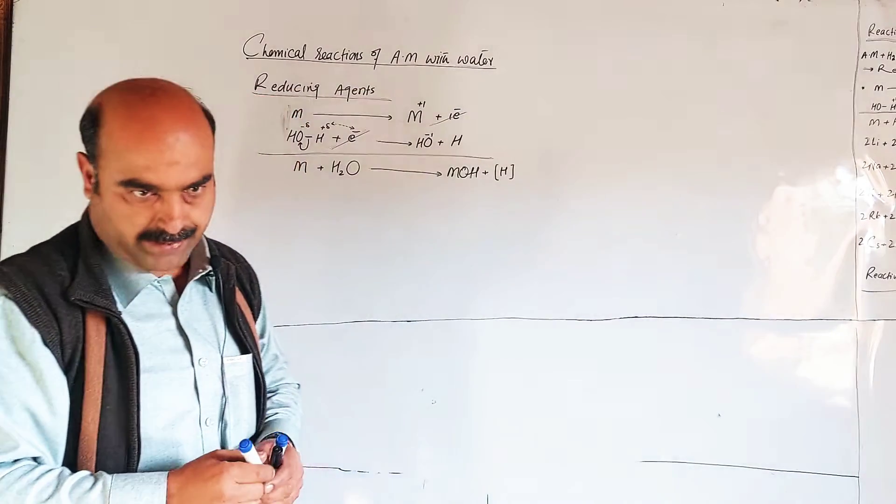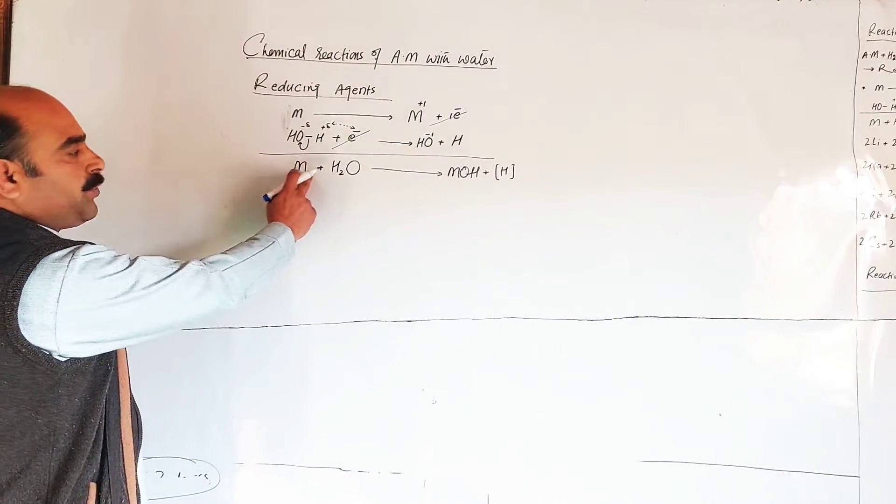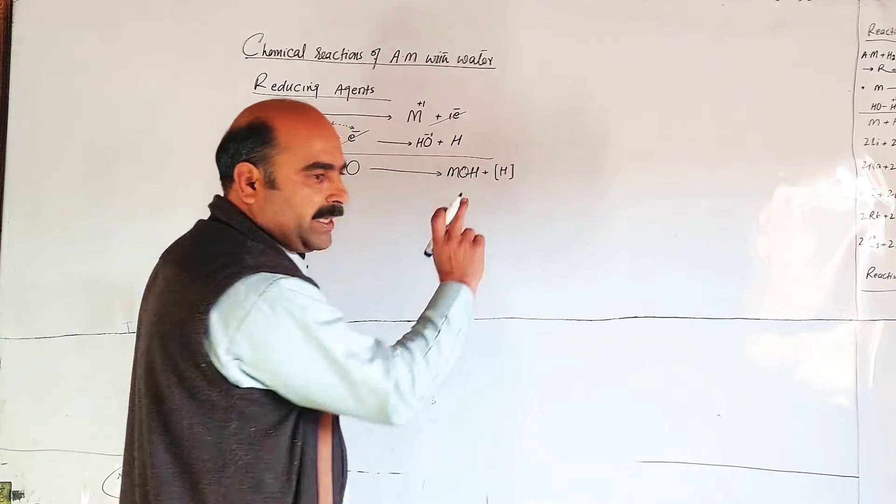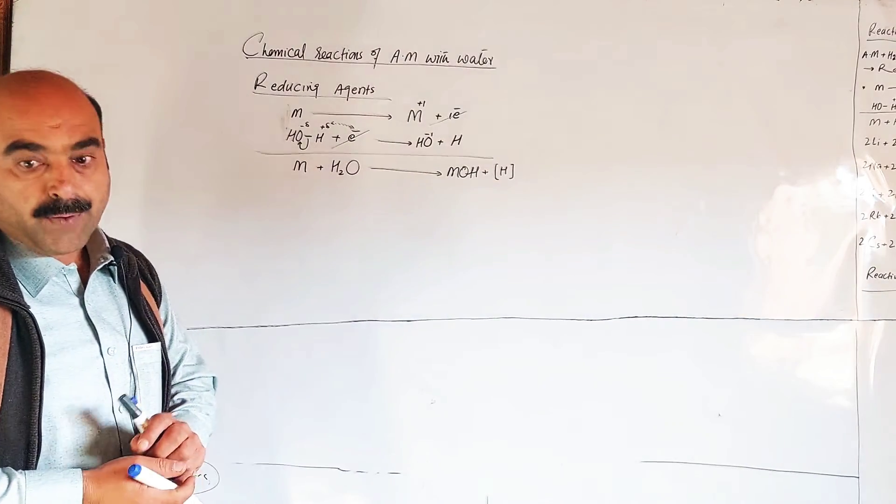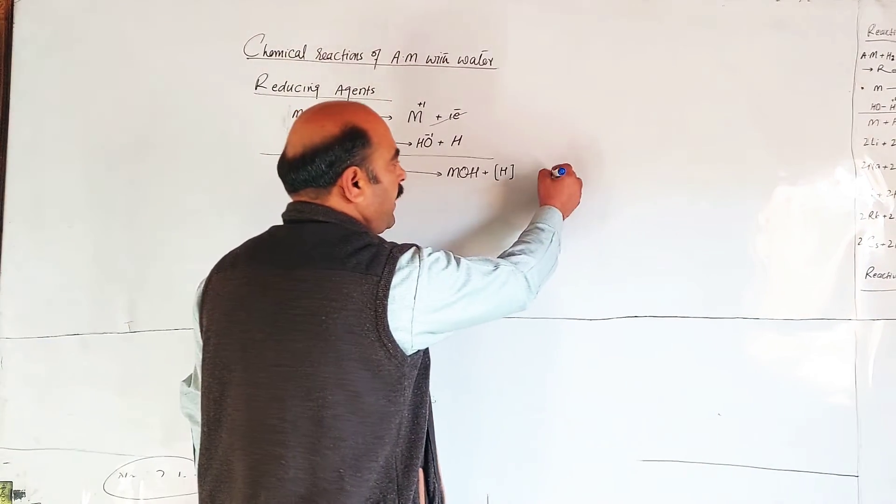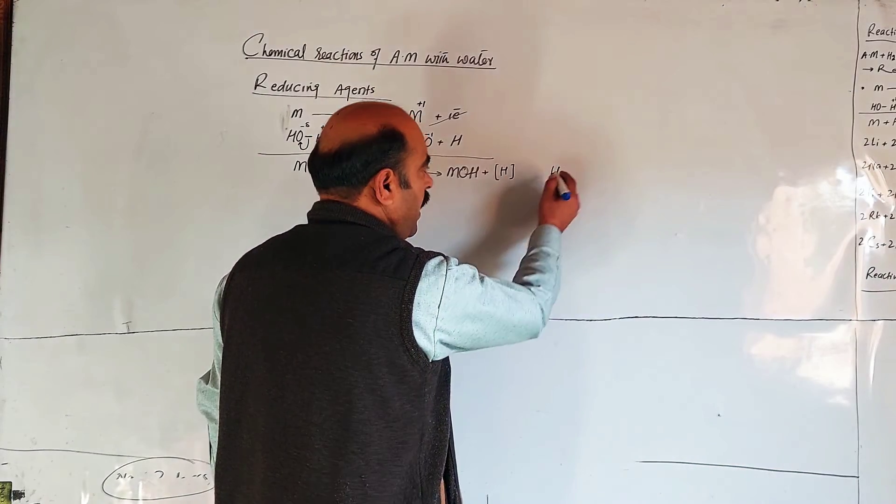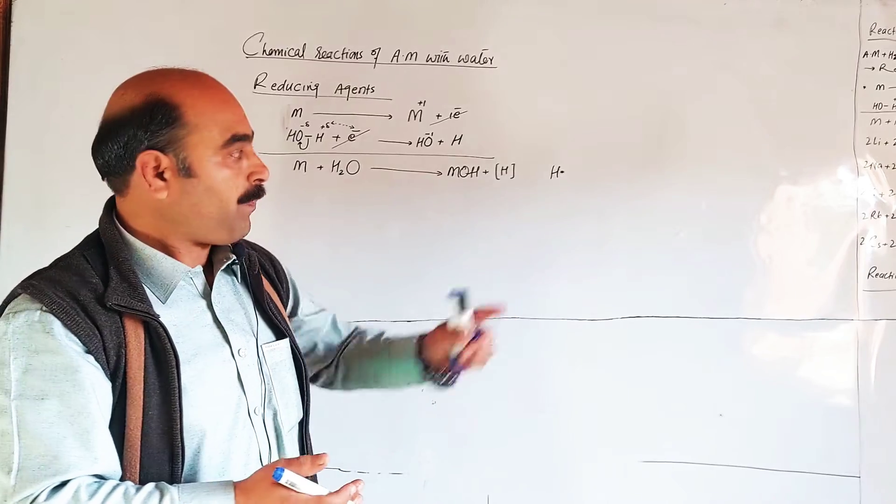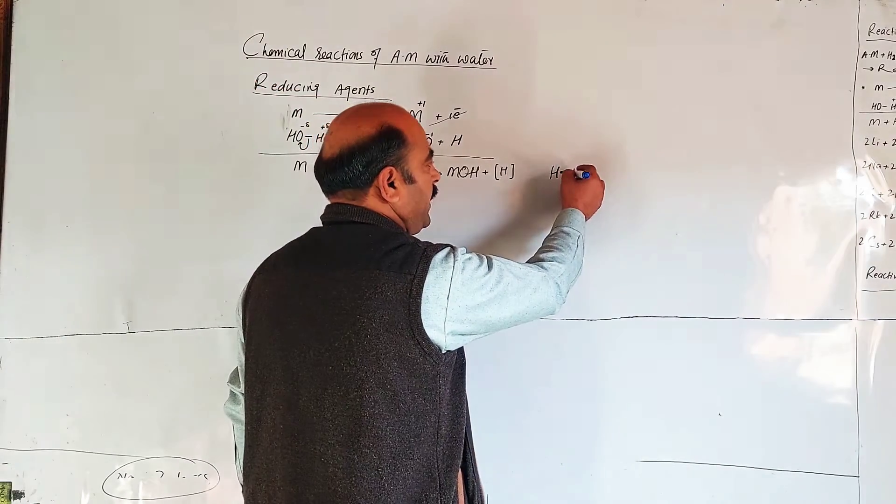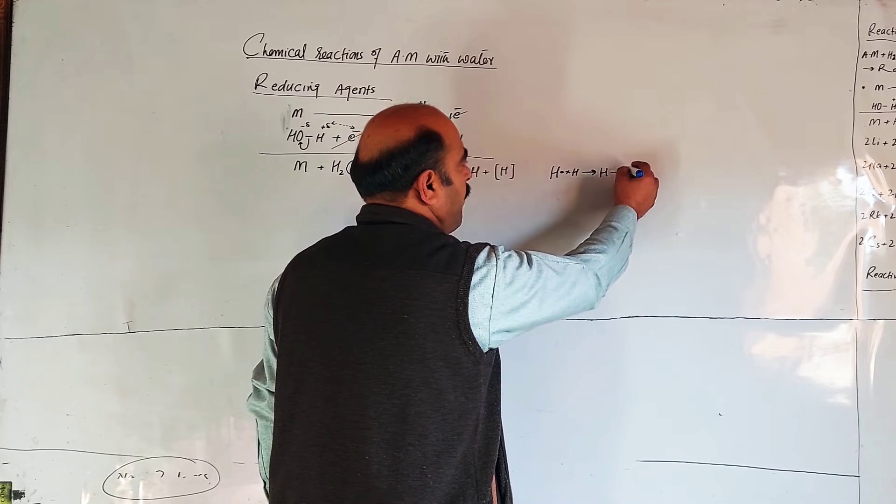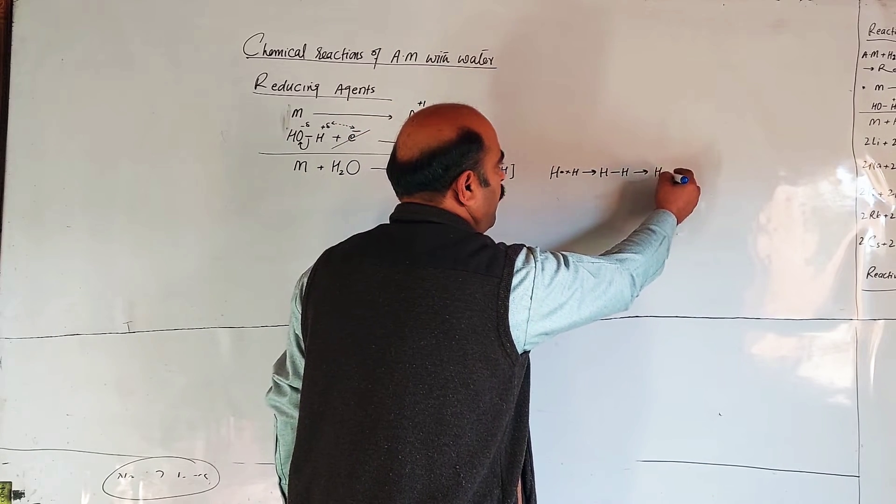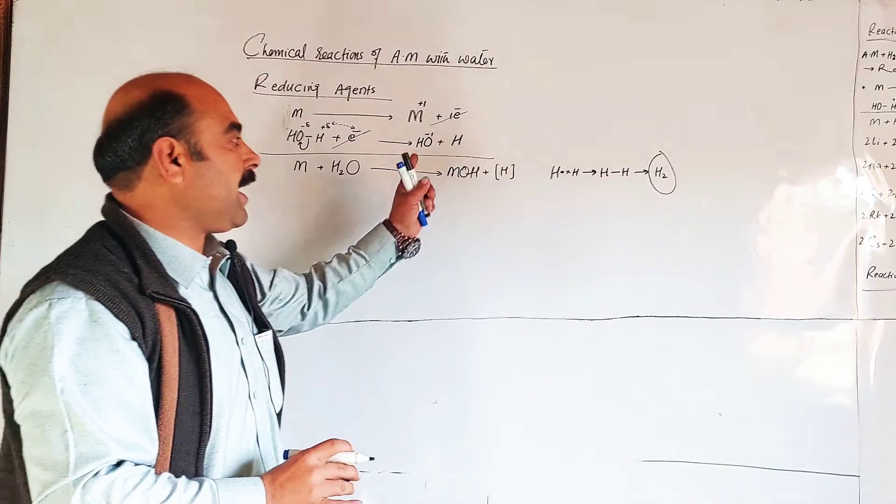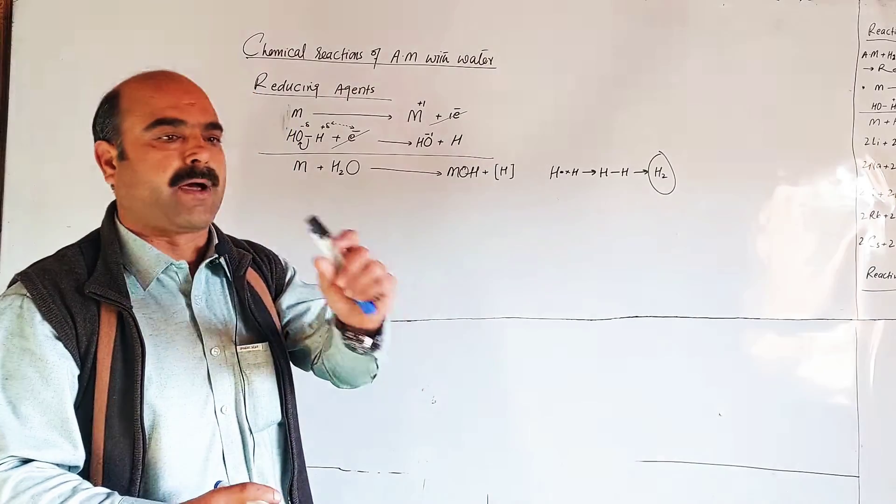Alkali metal reacts with water. The product is metal hydroxide and hydrogen gas. Hydrogen can't exist in atomic state. Hydrogen atoms bond together to form molecular H2.